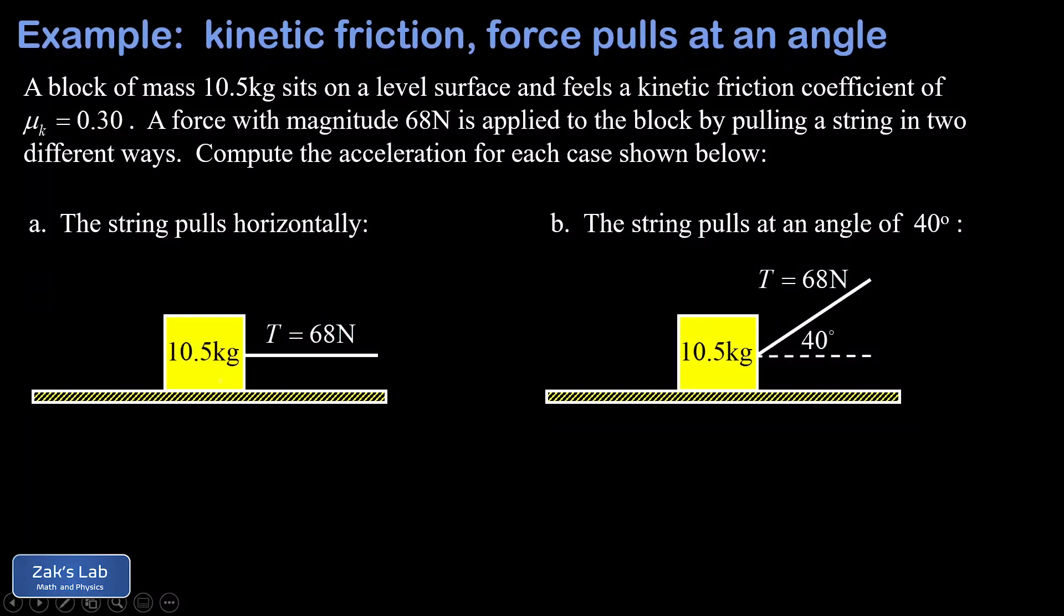In this video we're looking at a kinetic friction problem where we're pulling on a block by using a rope. We keep a tension of 68 newtons in that rope. In the first part of the problem, we pull perfectly horizontally with the rope and we want to find the acceleration of the block.